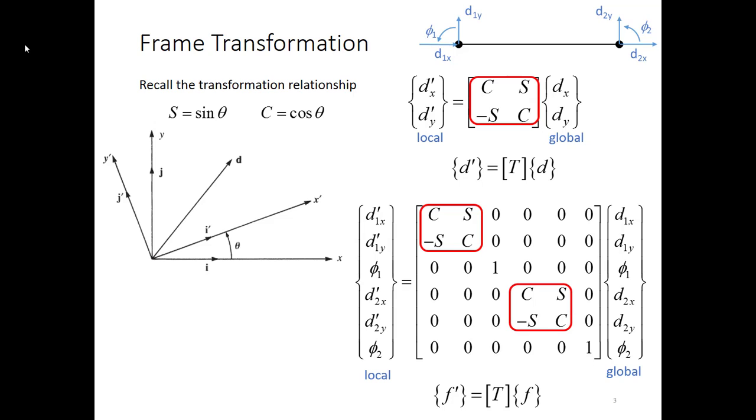So my force vector in global coordinates pre-multiplied by the T matrix is going to give me my force vector in local coordinates. In addition, we've seen previously that we can use the transformation matrix to convert a local stiffness matrix to a global stiffness matrix. We will do all of these in the rest of this video.